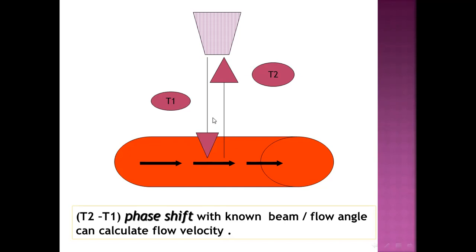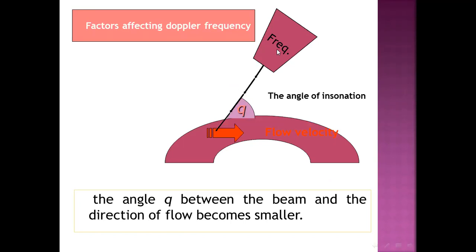The Doppler signal also changes with the angle of the beam. If the angle is acute or obtuse, this will affect the measured velocity or Doppler reading. This is the frequency at a given angle of insonation — this is the acute angle — where the angle between the beam and the direction of flow becomes smaller.